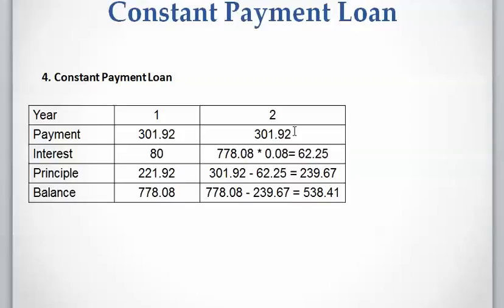For Year 2, the payment remains constant at $302. The interest is the remaining balance of $778 multiplied by 8%, which equals $62.25. The principal is $302 − $62.25 = $239.68. The remaining balance is $778 − $239.68 = $538.41 (approximately) after the Year 2 payment.